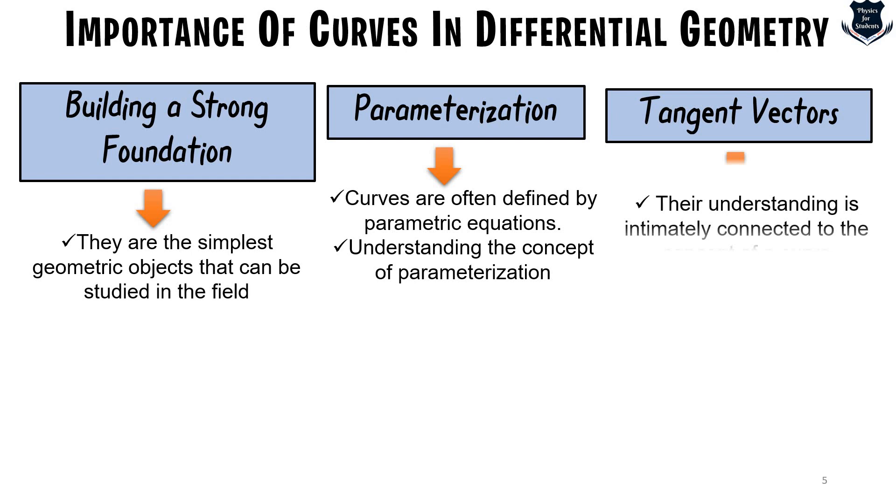The third one important is tangent vectors. Tangent vectors play a very fundamental role in differential geometry and their understanding is very intimately related to the concept of a curve. Tangent vectors provide information about the direction and the rate of change of a curve at a point. By learning about this you can gain an insight into geometric interpretation of tangent vectors and their relationship with the curve's behavior.